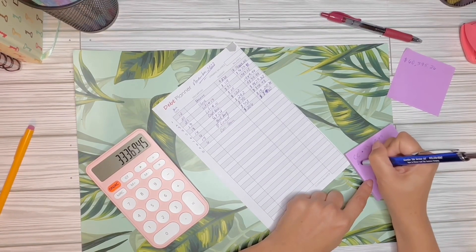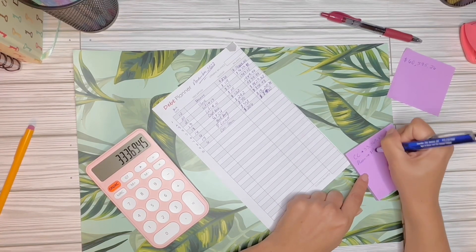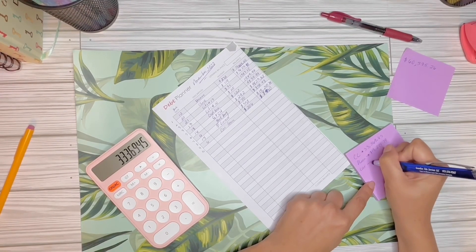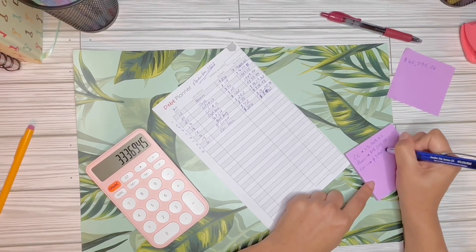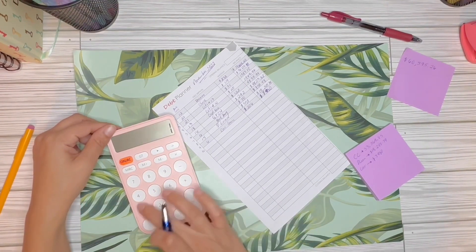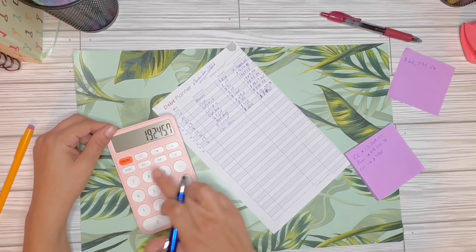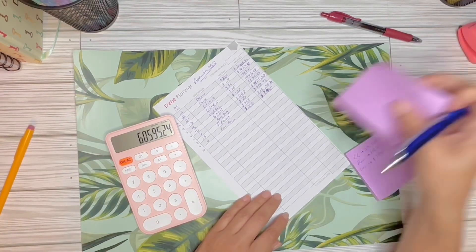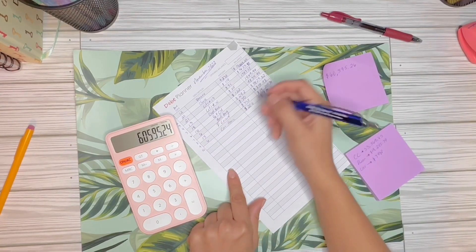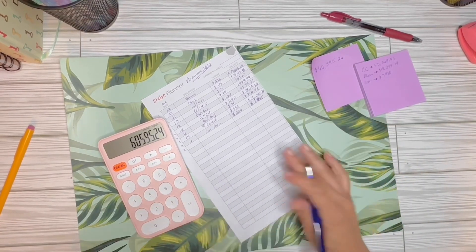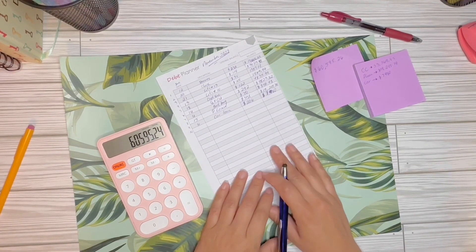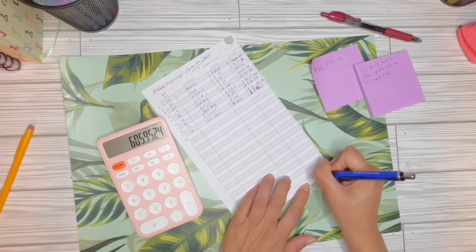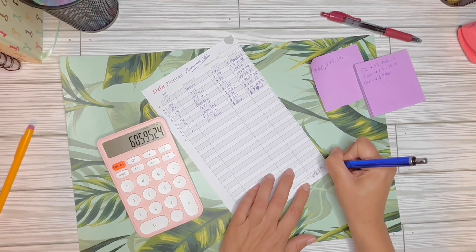Then I have the personal loan which is $19,245.79. And then the car loan is $7,980. Total: $33,369 plus $19,245.79 plus $7,980. My total debt is $60,595.24. Oh my goodness.